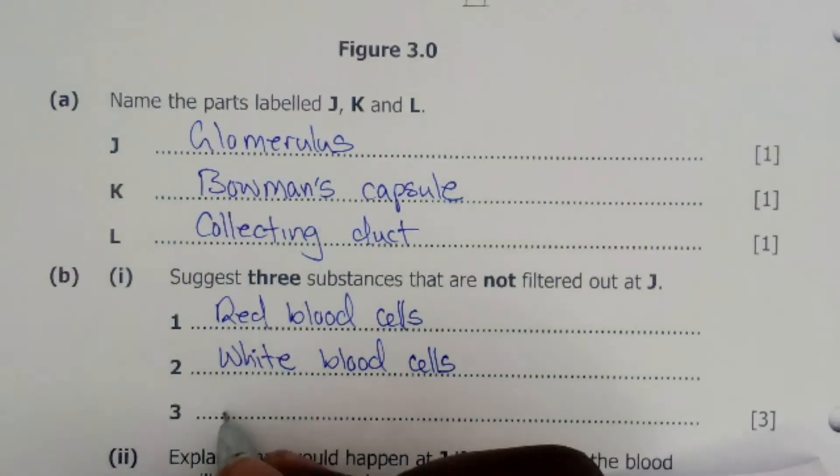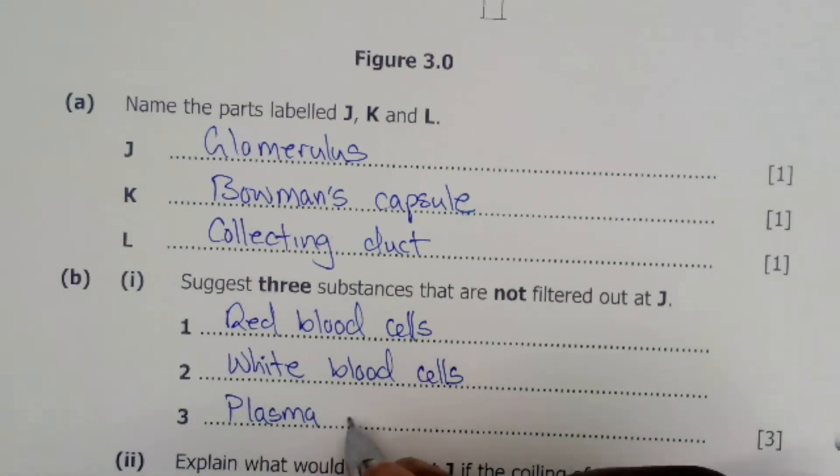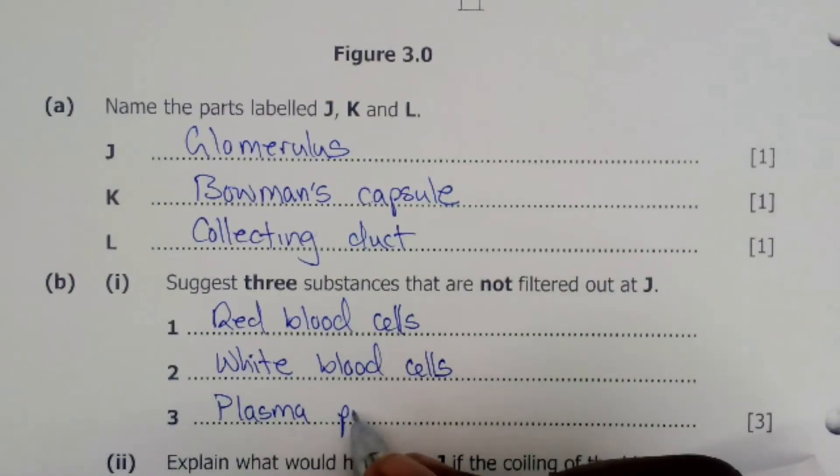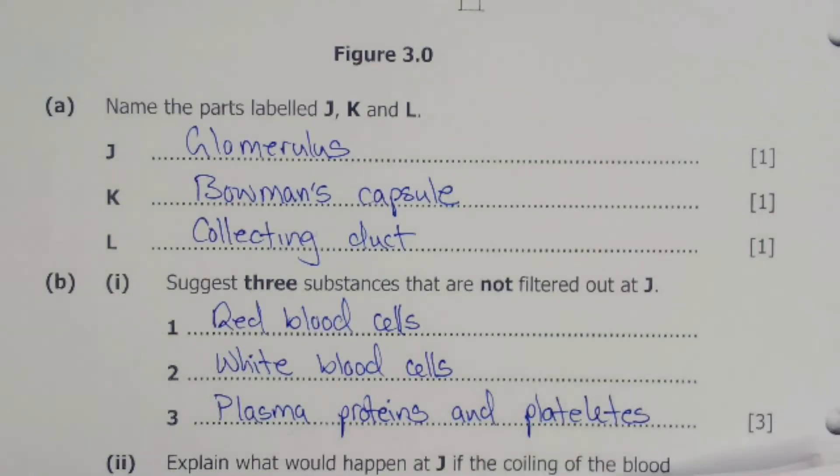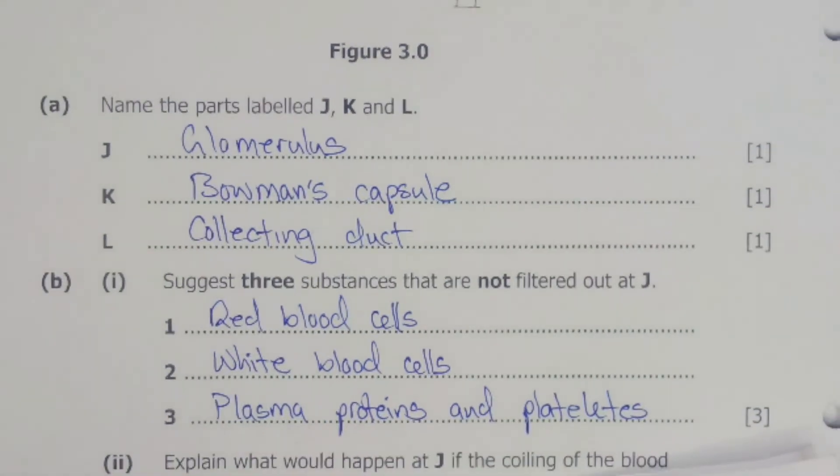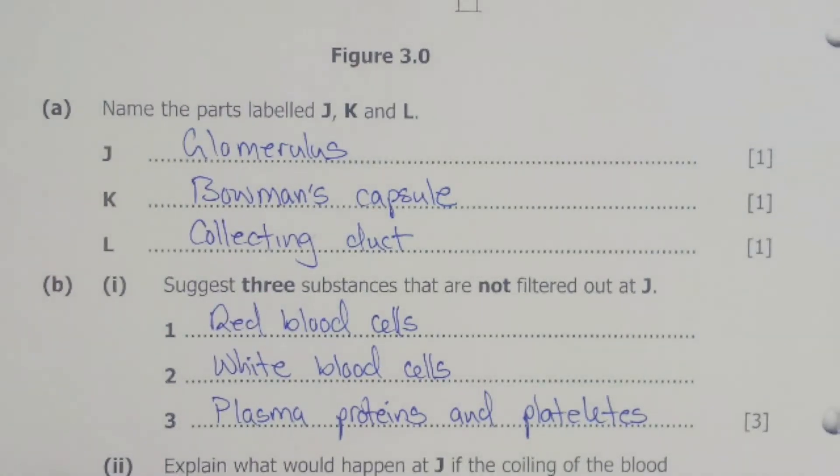Then also the plasma proteins, as well as the platelets. So these are the components of blood which won't be filtered during ultrafiltration because they are too large to pass through the glomerulus.